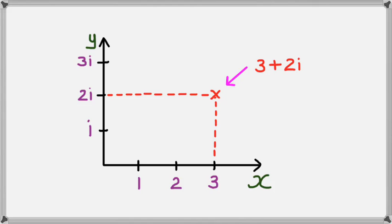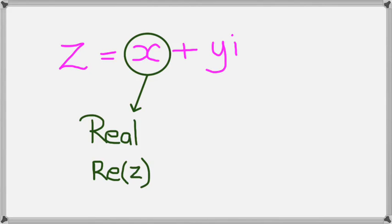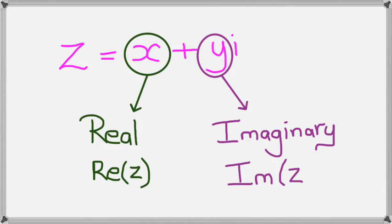Where 3 is the real part of the number, and the 2i is the imaginary part of the number. So complex numbers generally are written in this format of z equals x plus yi, where x tends to be the real part of z, and y tends to be the imaginary part of z. And it's written in these two notations here.